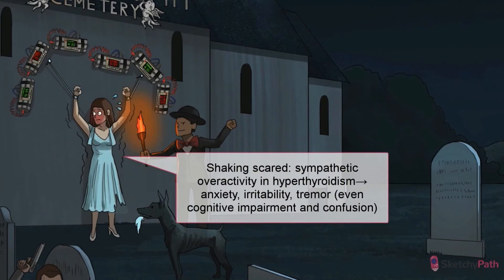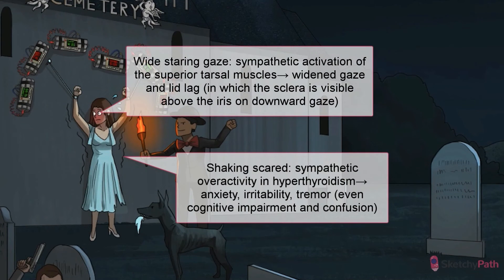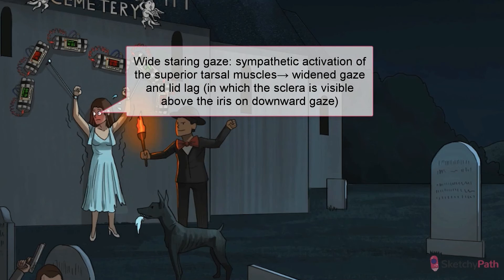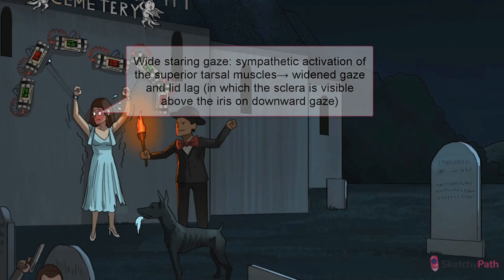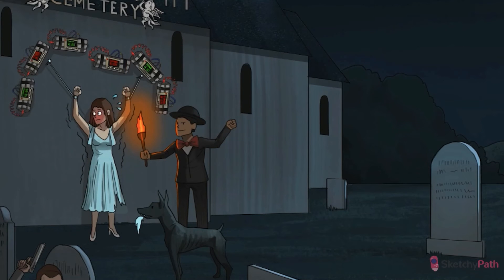Sympathetic overactivity is thought to contribute to the classic symptoms of nervousness, irritability, and tremor. Hyperthyroidism can even cause cognitive impairment and confusion, especially in the elderly. Patients might have a wide-eyed, staring appearance from excessive sympathetic action on the superior tarsal muscles. You might also notice lid lag, in which the sclera is visible above the iris when a patient looks downward, as if the eyelid was lagging behind.